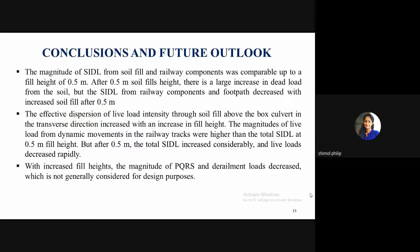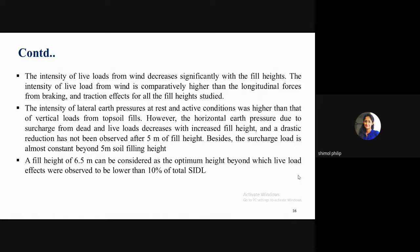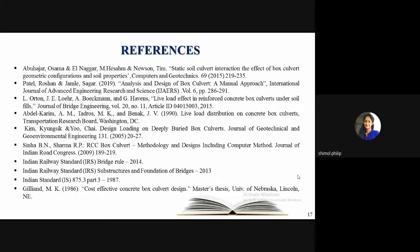This work provides knowledge on different loads acting on RUB box culverts providing overhead passages for trains and highways. From this study, 6.5 m is the optimum fill height beyond which the effect of live loads can be neglected in a two-celled RUB box culvert. The intensity of live loads and SIDL from railway components decreases with the increase in fill height. These are the references — thank you.